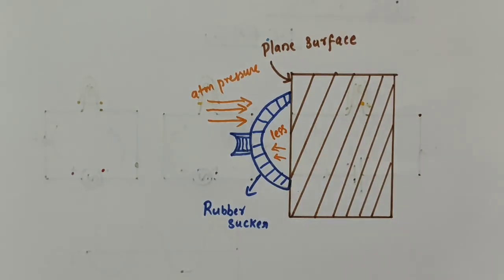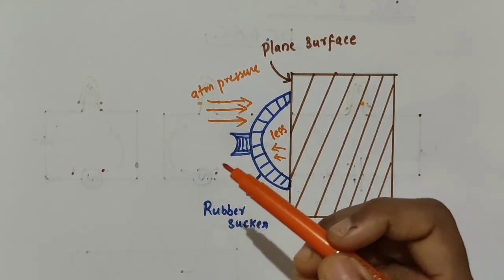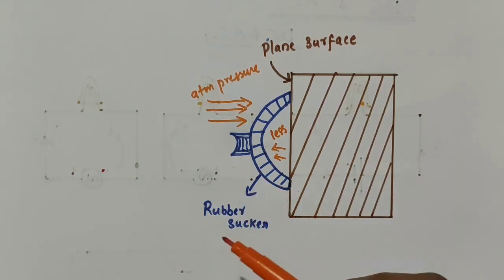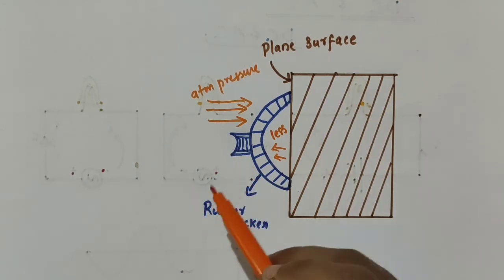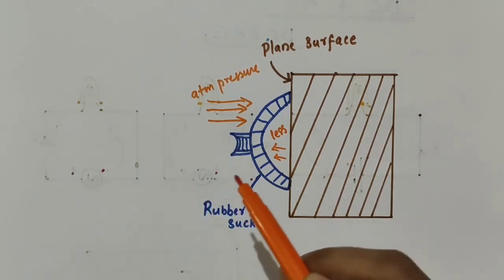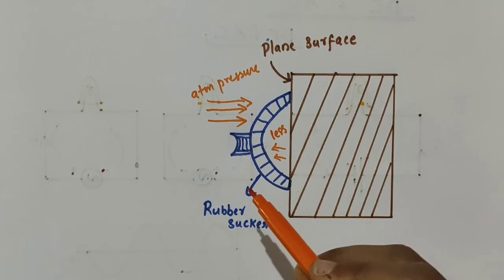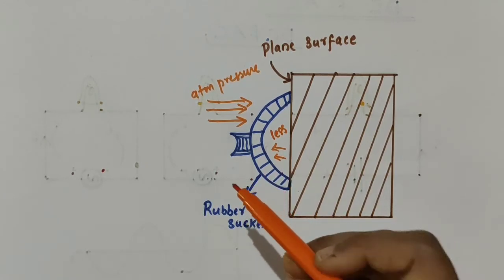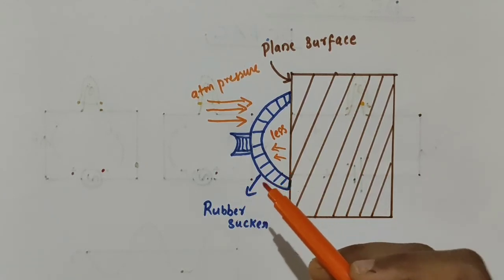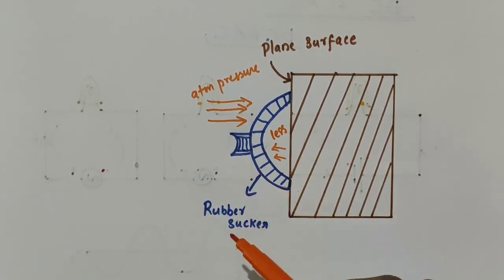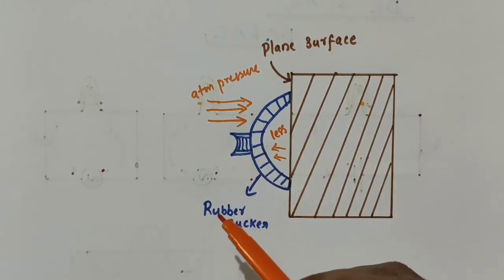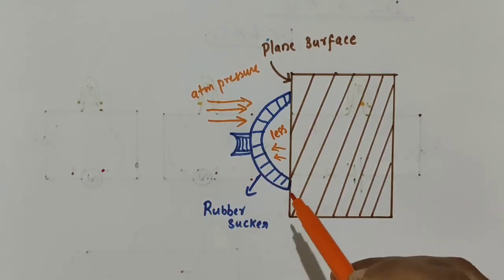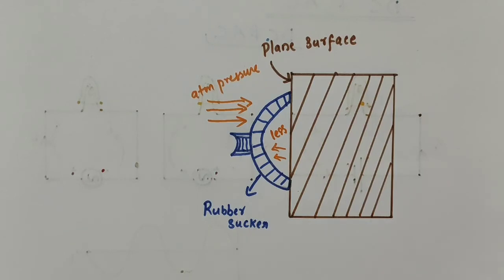In this video, we have discussed about atmospheric pressure. The pressure exerted by the air around us is known as atmospheric pressure. Air pressure is exerted in all directions because air molecules move in all directions. I hope you understood the concept of atmospheric pressure. Thank you.